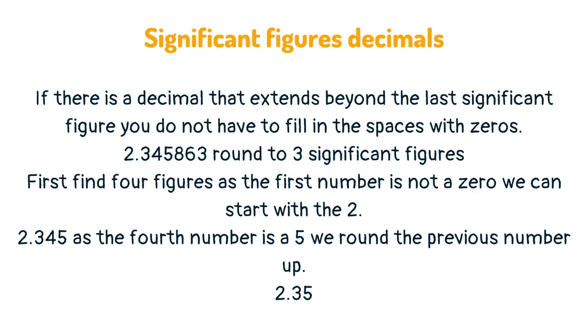If there is a decimal that extends beyond the last significant figure, you do not have to fill in the spaces with zeros. For example, 2.345863 rounded to three significant figures: First find four figures. As the first number is not a zero, we can start with the 2. 2.345. As the fourth number is a 5, we round the previous number up to get 2.35.